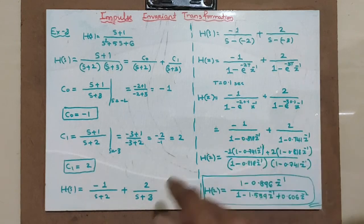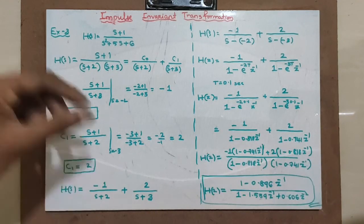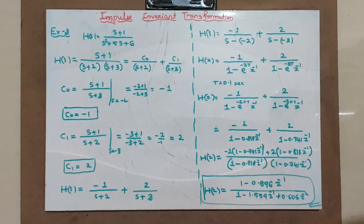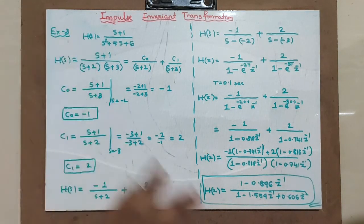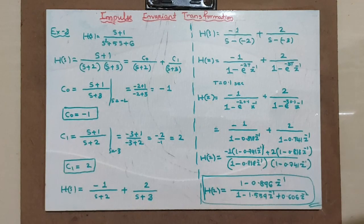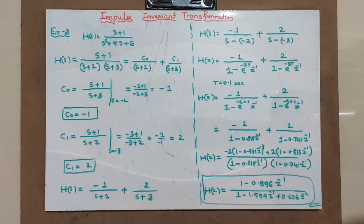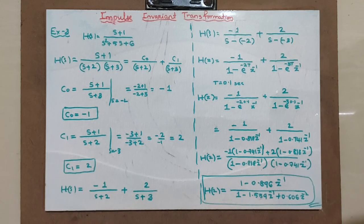The same defining equation (s minus s₀) was used, but the initial step required partial fraction expansion. I hope you understood this. I will be giving Assignment 6 on this topic so you can verify your understanding. Try to solve it and upload the assignment. If you have any doubts, you can put them in the group or contact me directly. Thank you.